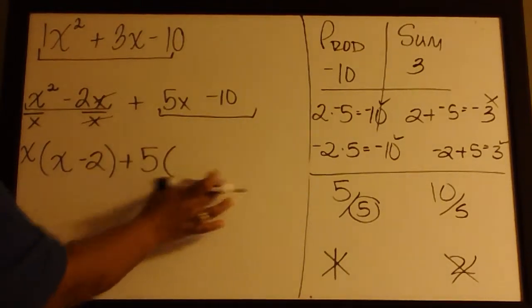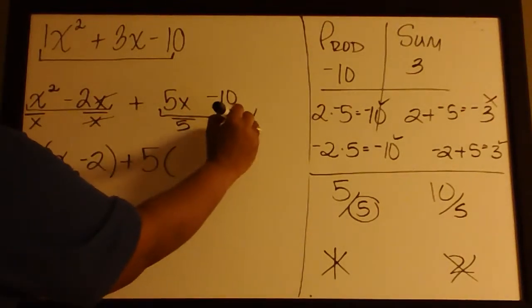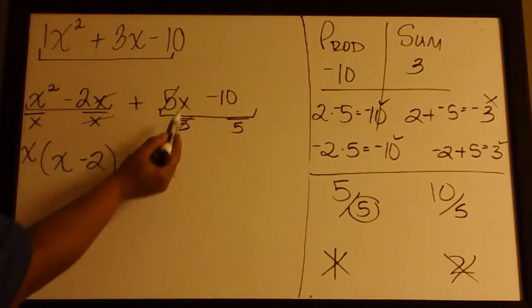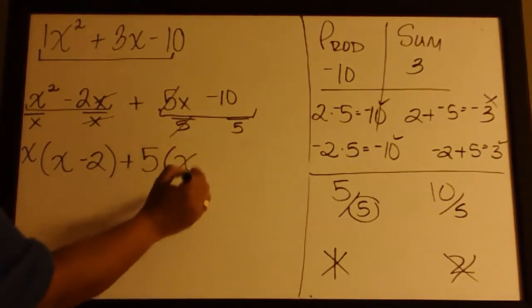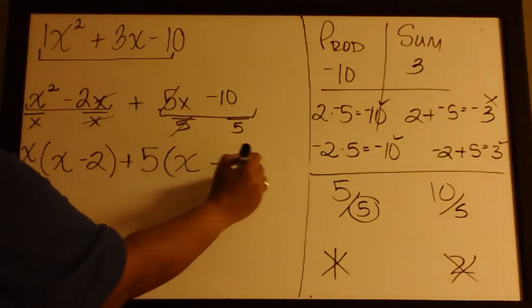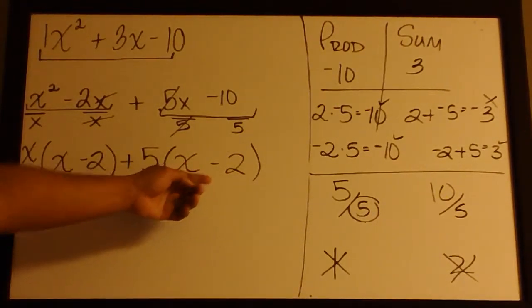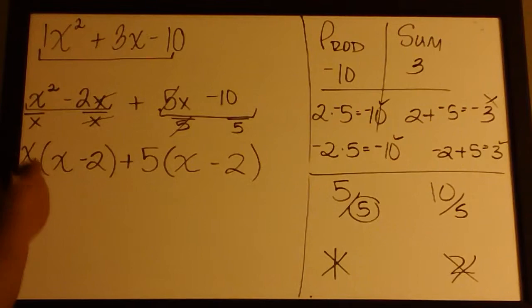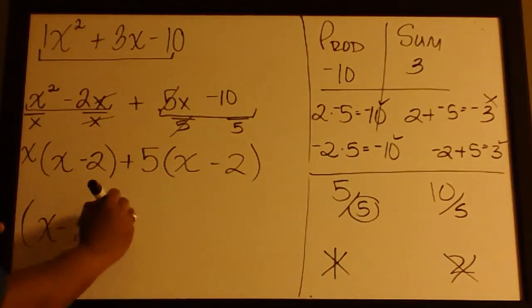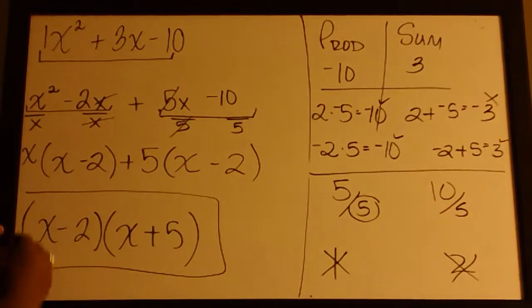So to determine what goes into parentheses, I will divide each of these terms by the GCF of 5. Notice here that these 5s cancel, leaving us with just x. And negative 10 divided by positive 5 is negative 2. We have reached our goal of having the same factors in each parentheses. So when we write our answer, one parentheses will consist of x minus 2 and the other of x plus 5. This is the answer.